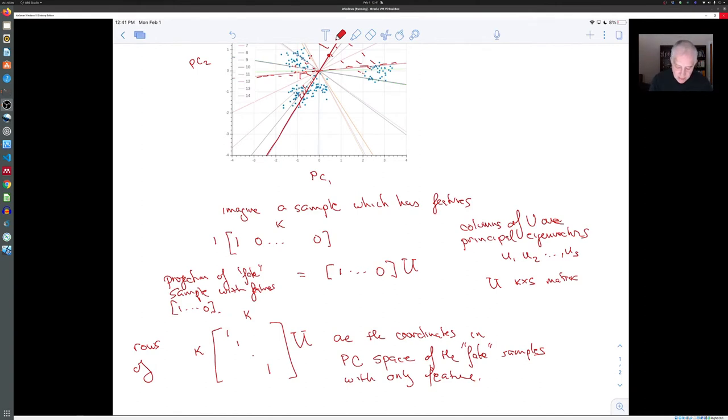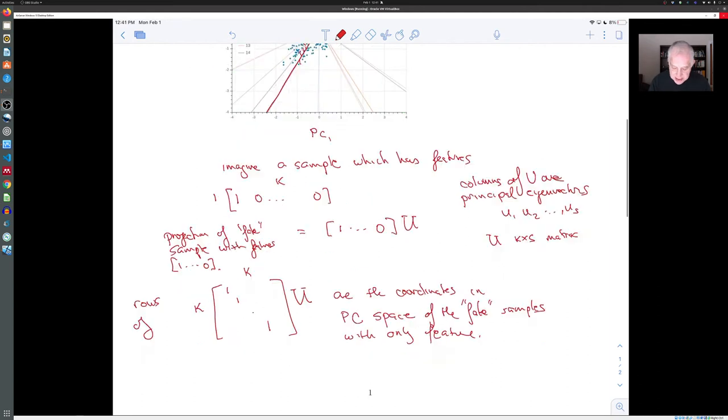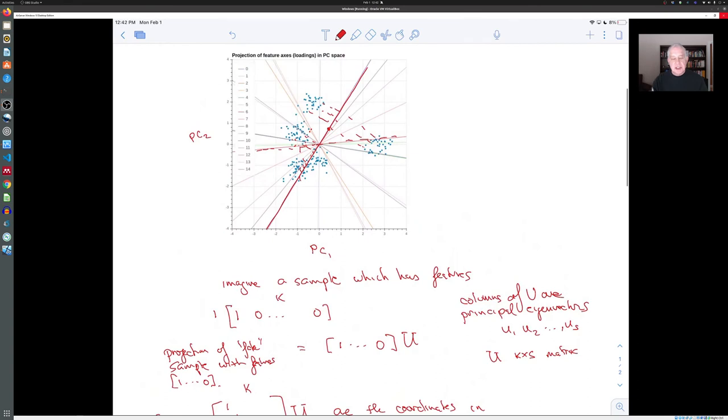So that's how you interpret the loadings. You make this a matrix of eigenvectors and you think of each row as giving you a direction in the principal component space, which is the projection of one of the features down into this small subspace.